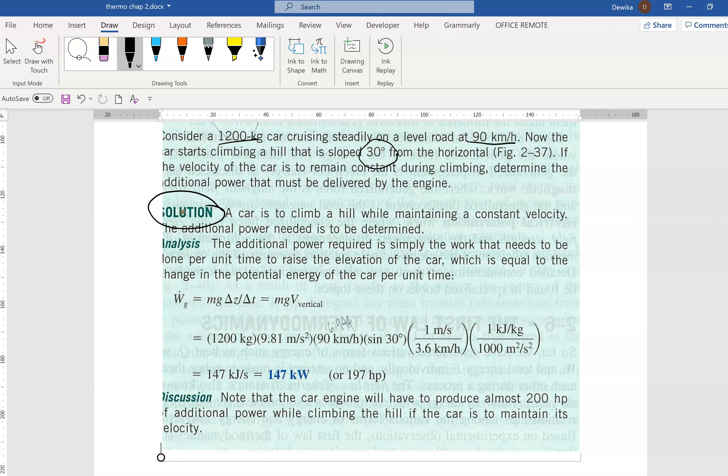If the velocity of the car is to remain constant during climbing, determine the additional power that must be delivered by the engine. The car is to climb a hill while maintaining a constant velocity. The additional power needed is simply the work that needs to be done per unit time to raise the elevation of the car, which equals the change of potential energy mgh.